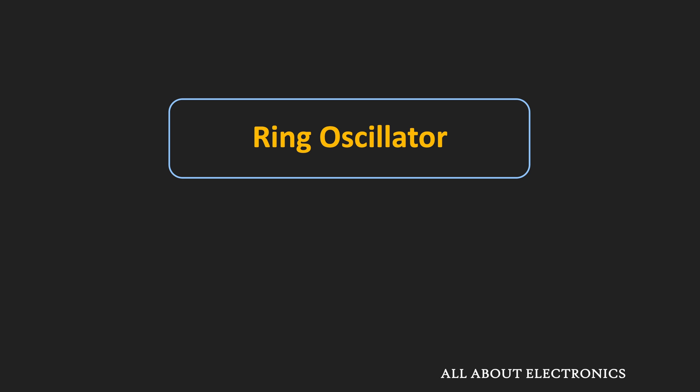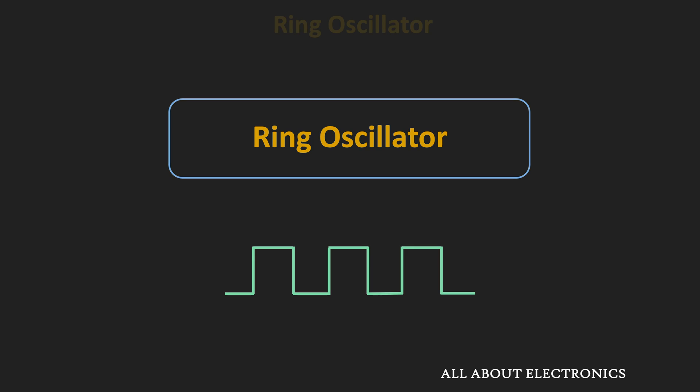Hey friends, welcome to the YouTube channel All About Electronics. In this video, we will learn about the Ring Oscillator. This ring oscillator is a digital circuit which is designed using inverters or NOT gates. Since it is an oscillator circuit, it will generate a square wave of a specific frequency.